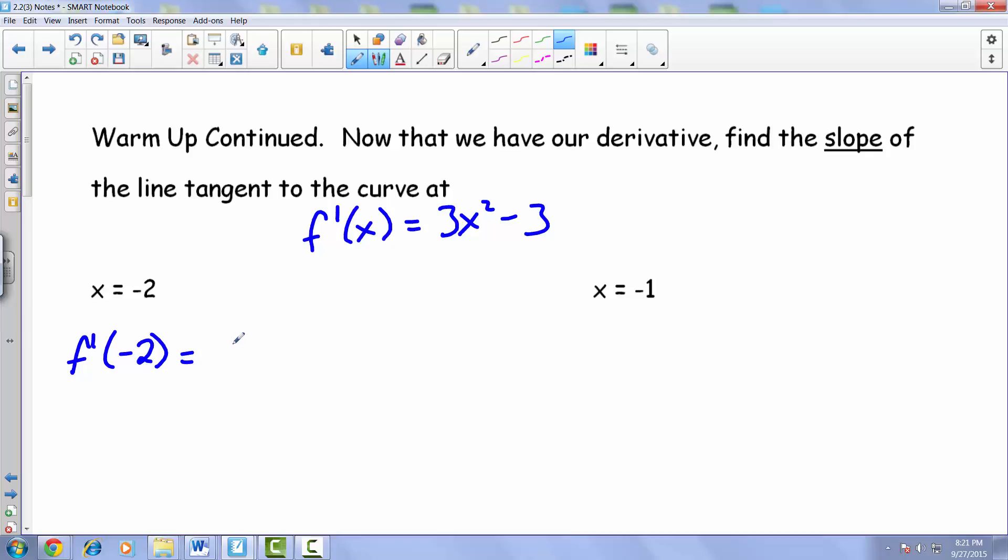So it looks like for this one, we end up with 3 times negative 2 squared minus 3. Negative 2 squared comes out to be 4 times 3 gives us 12 minus 3. So it looks like the slope comes out to be 9.